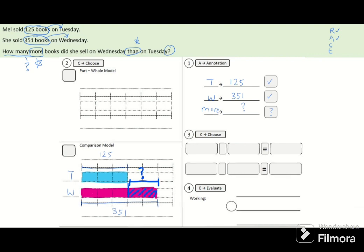To find that, I will write Wednesday minus Tuesday equals how many more. 351 minus 125 equals the answer.